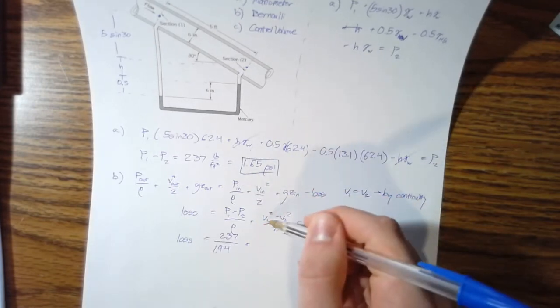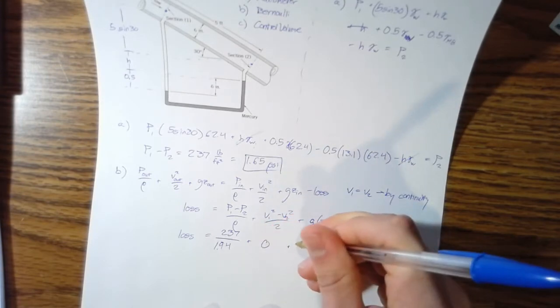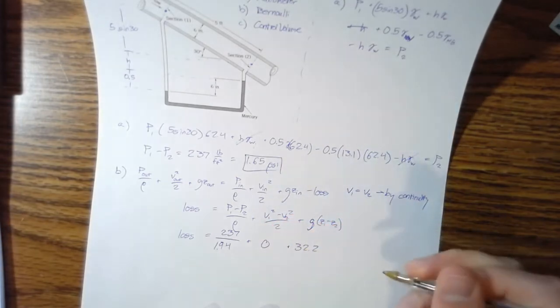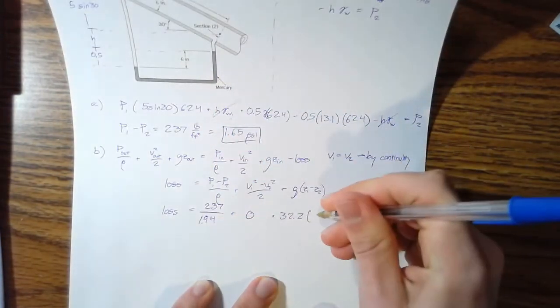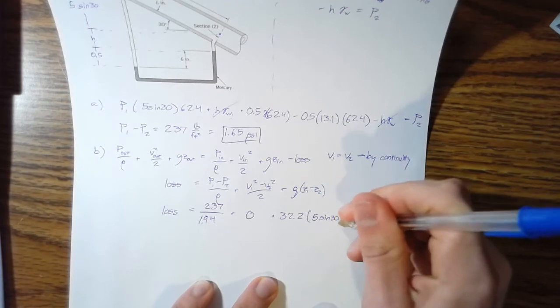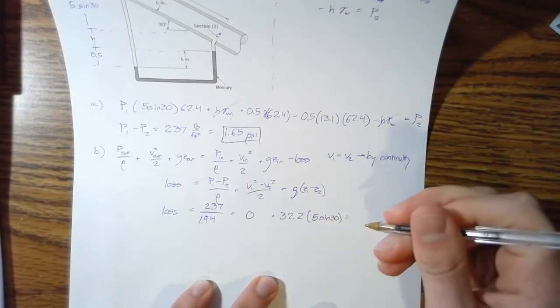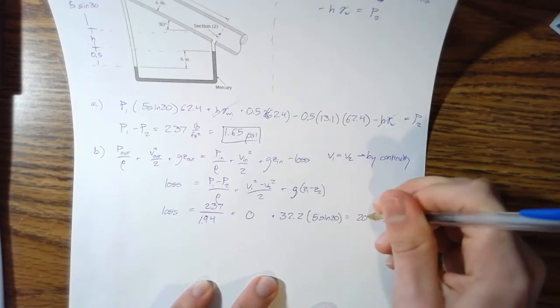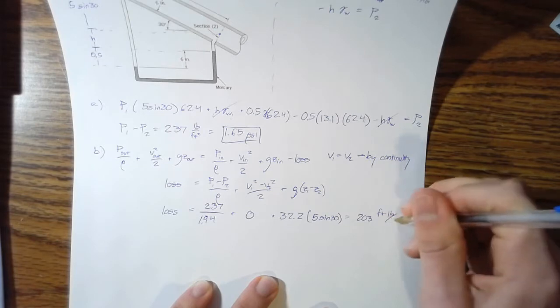Acceleration due to gravity, 32.2, and the difference in elevations is going to be five times sine of 30. All right. And so we get that our loss is 203 foot pounds per slug.